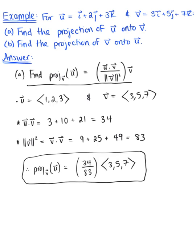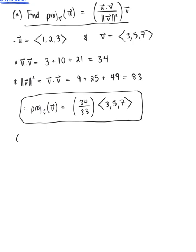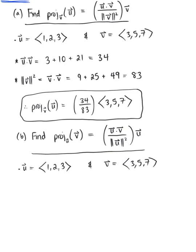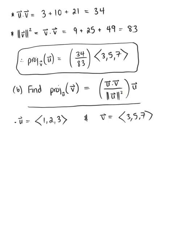Now let's find the projection of vector v onto vector u. The formula changes: we still have the dot product of u and v in the numerator, but now divide by the magnitude of vector u squared, multiplied by vector u. We already know from part a that vector u·vector v = 34.